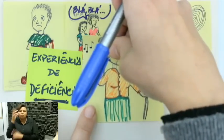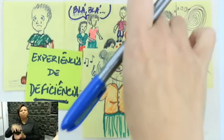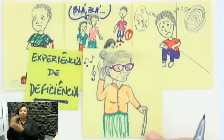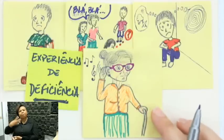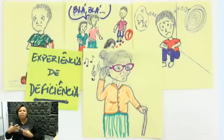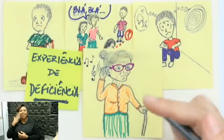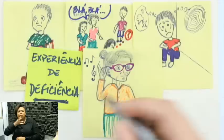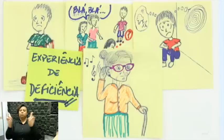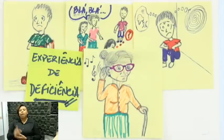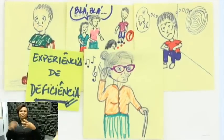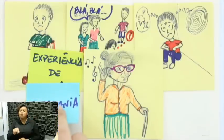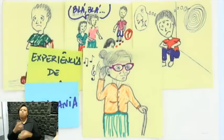Se chegarmos à velhice, por exemplo — a última figurinha que estou colando é a de uma senhora que já chegou nessa fase da vida, em que as pernas ficam mais cansadas, a audição não é mais a mesma, o raciocínio fica um pouco mais lento. A gente acaba experienciando a deficiência mais cedo ou mais tarde na nossa vida. Então dessa aula a gente vai bater um papo exatamente sobre essas questões — sobre deficiência, e isso tem a ver muito com cidadania.